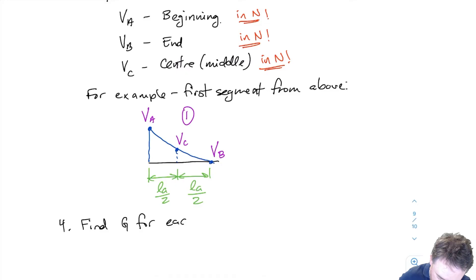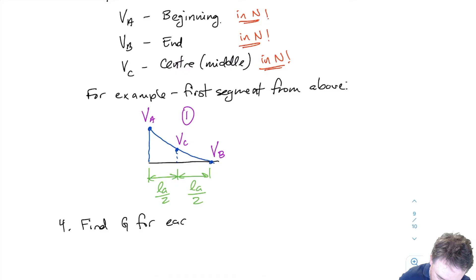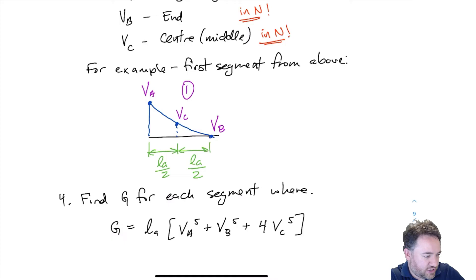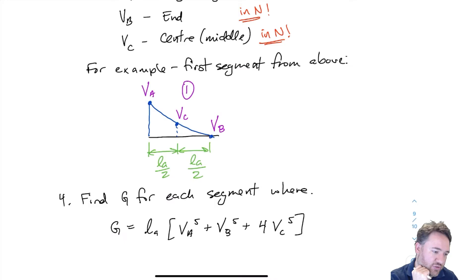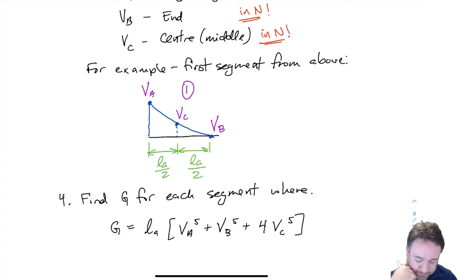The next step is to calculate the parameter G for every segment. I have the length of the segment times each of these shears to the power of five, all added together. Note that VC, which is the one in the middle, has a four multiplier as well. Remember that all V values are in newtons, so I'm going to get a very large value for G once I take those newton values to the power of five. All of these values should be positive regardless of which side of the shear force diagram they come from.